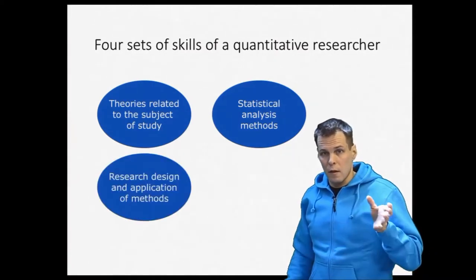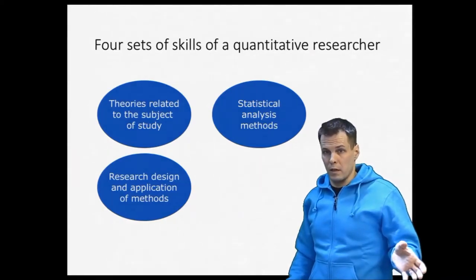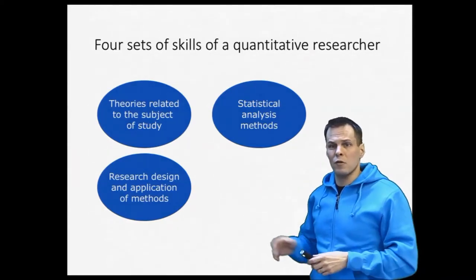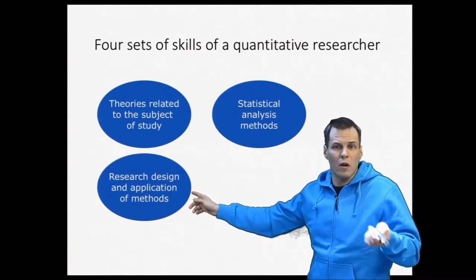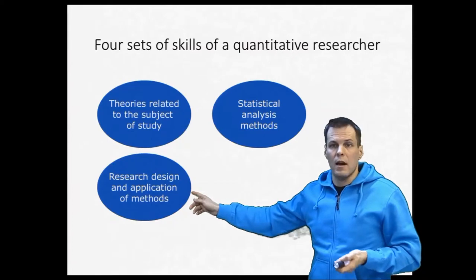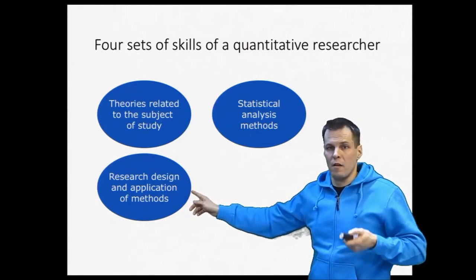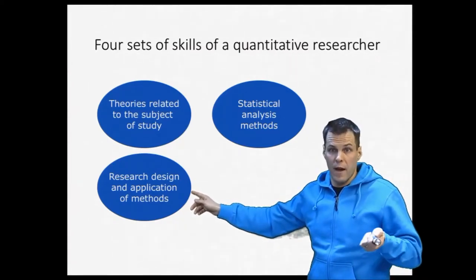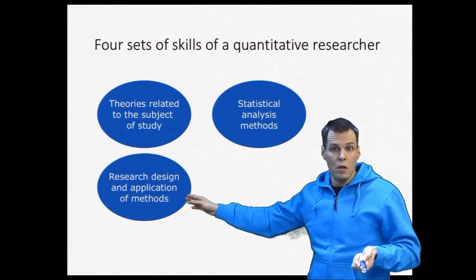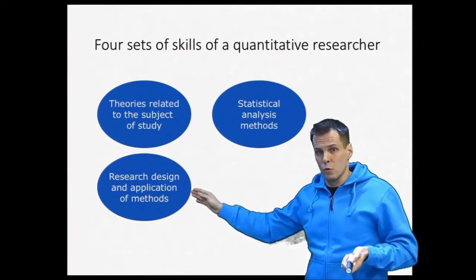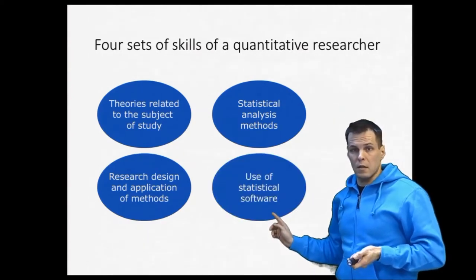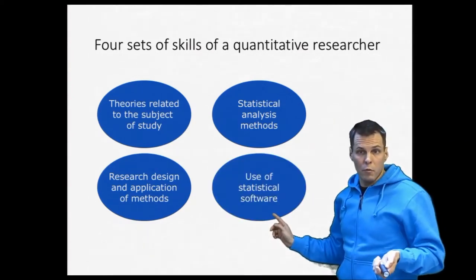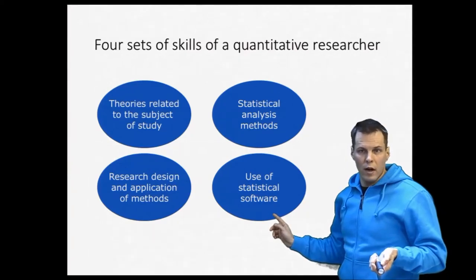The third thing is research design and application of methods. That refers to skills such as data collection, what data to collect, how do you do surveys for example, and also what are the standards of methods in your field, because it varies between fields and you have to know what is expected in terms of quality. Then the final thing is use of statistical software. So you have to be able to use a computer to run your analysis.